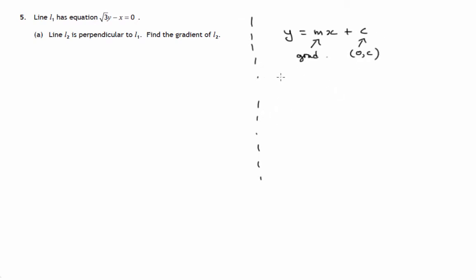The other one is that if two lines have gradients, suppose they are m1 and m2, that multiply to give us negative 1, then they're perpendicular to each other.